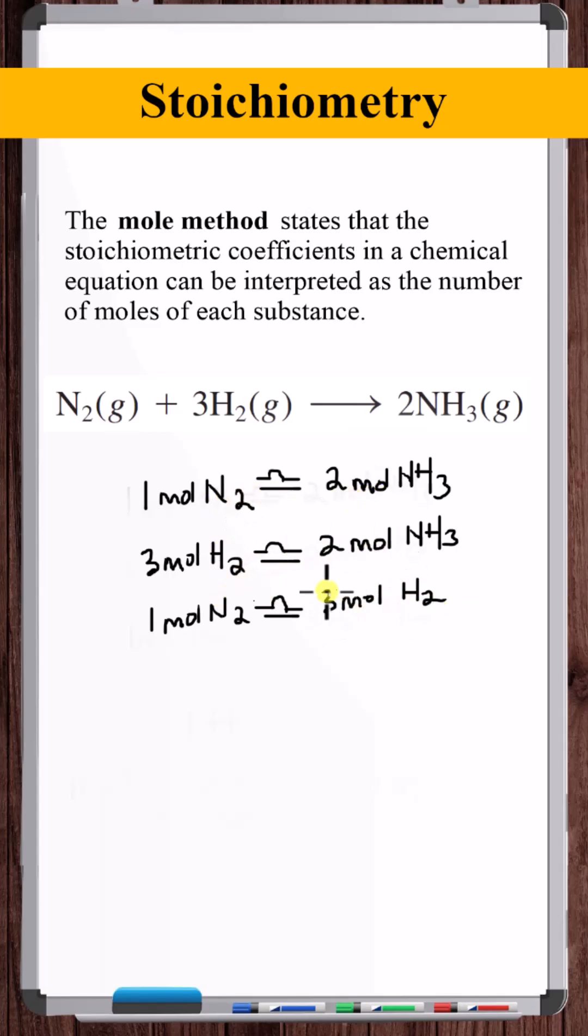We can use these equivalencies as conversion factors, similar to how we say that one foot is equal to 12 inches. So if we have 10 feet, we have 120 inches.